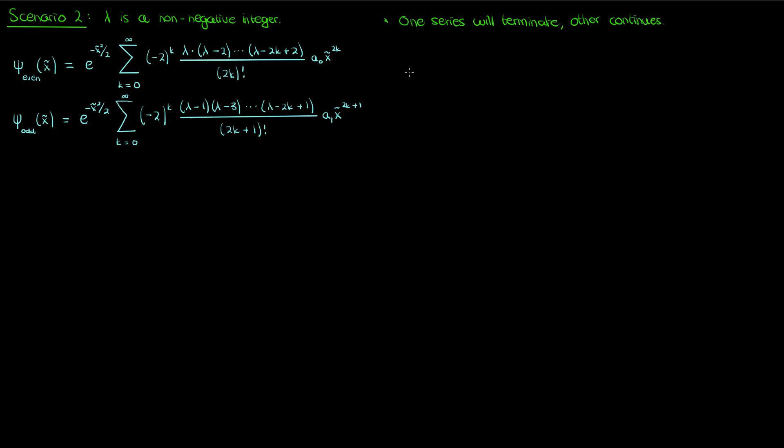While the other series will continue forever, but we don't care about that other series because if it continues forever then it will eventually diverge for a very large k at the edges of the domain. This is what we just showed, that solutions corresponding to these non-terminating series are not normalizable.